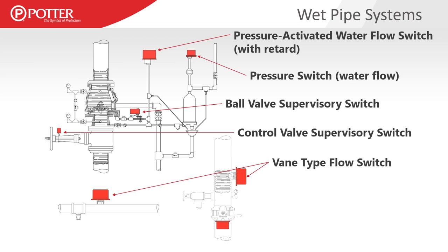Vein type flow switches exist on wet pipe systems and can be installed in several different configurations — vertically on a vertical riser, horizontally on a floor control valve assembly, or really anywhere that we want to watch for water flow. Vein type flow switches have their own special requirements. Any valve controlling water supply has to have some kind of control valve supervisory switch. There are lots of different methods for supervising those valves, but they all essentially operate in the same manner.